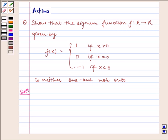Hello and welcome to the session to discuss the following problem today. Show that the signum function f: R → R given by f(x) equals 1 if x is greater than 0, 0 if x equals 0, and minus 1 if x is less than 0, is neither one-to-one nor onto.